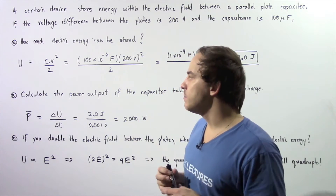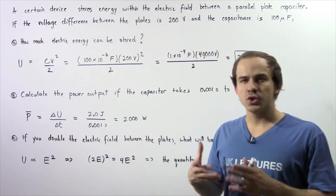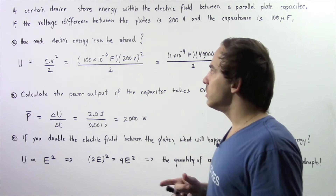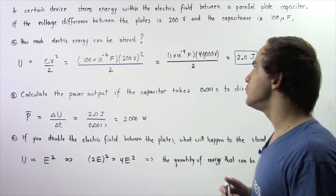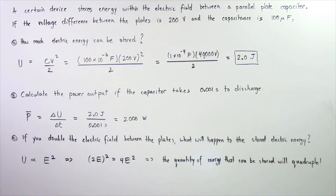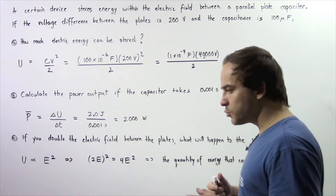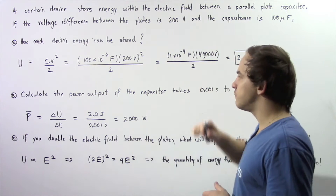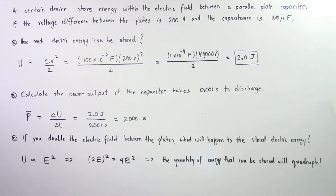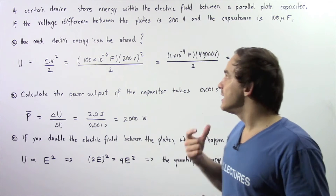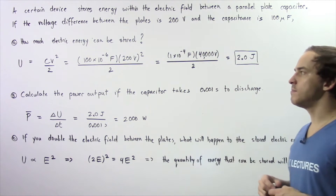Let's look at the following example that deals with electric energy stored within a capacitor. Suppose a certain device stores energy within the electric field between a parallel plate capacitor. The voltage difference between the two plates is 200 volts and the capacitance is 100 microfarads. In part A, how much electric energy can be stored within the capacitor?